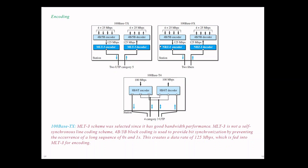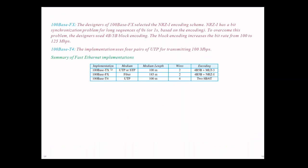In 100BaseT4, four category 3 UTP cables were used, and the encoding scheme is 8b/6T. Encoders are used while transmitting and decoders are used for reception.